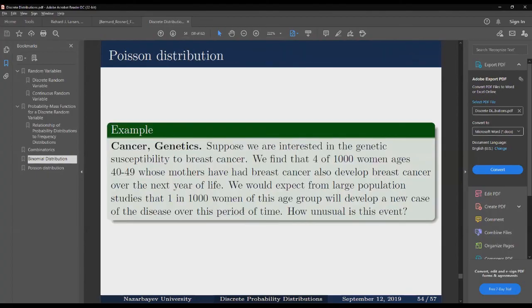Now, let's take a look at the following problem. We find that 4 out of 1,000 women ages 40 to 49 whose mothers have had breast cancer also develop breast cancer over the next year of life. We would expect from large population studies that 1 in 1,000 women of this age group will develop a new case of the disease over this period of time. How unusual is this event?